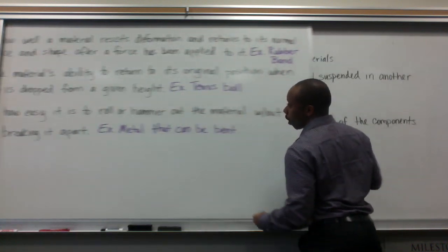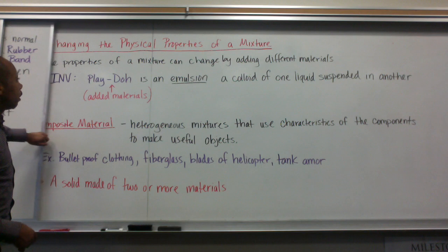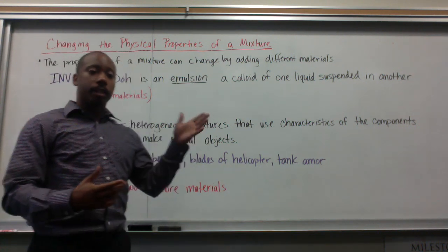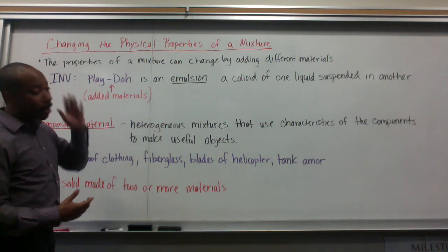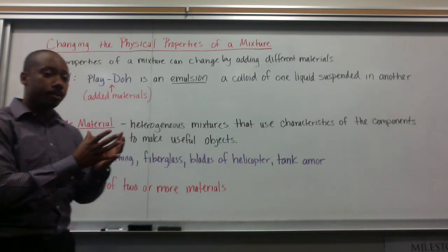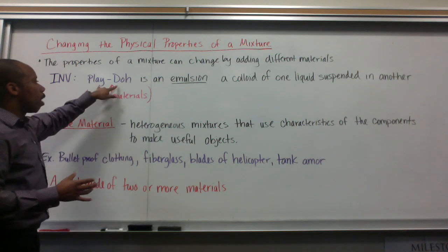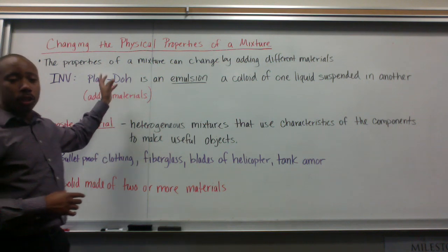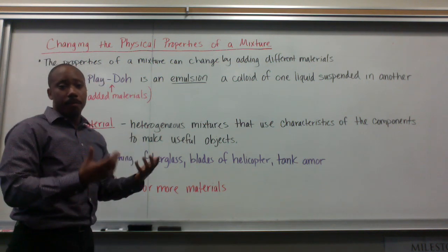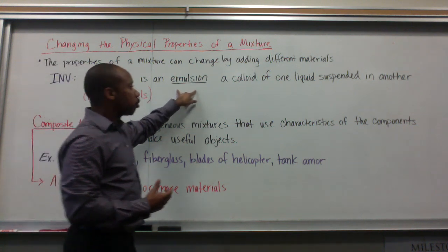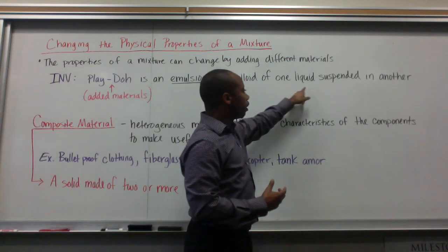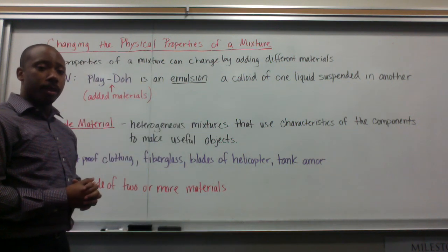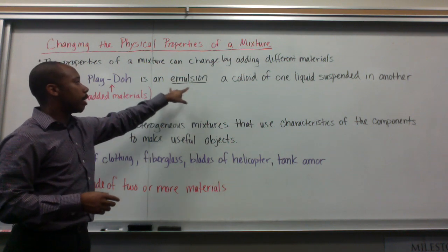We're talking about physical properties, and in the laboratory, you looked at how physical properties can change. We're going to look at the changing of physical properties of a mixture. In the lab, you had your Play-Doh and you watched the properties change as you added different materials. Play-Doh itself falls into a specific category of a type of mixture — it's called an emulsion. An emulsion is a colloid of one liquid suspended in another. So we know what a colloid is, and now we know what an emulsion is.